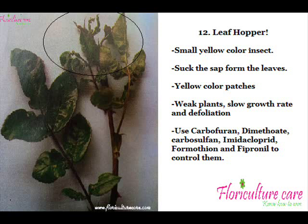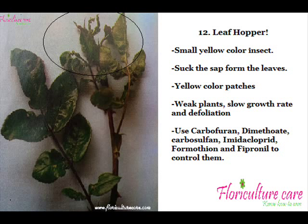Leaf Hopper is a small yellow color insect that sucks sap from leaves, leaving yellow color dye on the leaves after damage, with yellow color patches visible. If the insect is present, white exoskeletons can be seen on the underside of the leaves. Weak plants, slow growth rate, and defoliation before maturity result when this pest attacks. Use Carbofuran, Dimethyloid, Carbosulfan, Imidacloprid, Formethan, and Fipronil to control them.